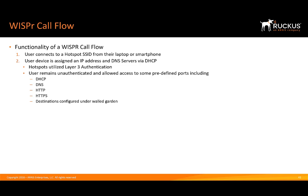The ports you're allowed access to include DHCP, DNS for resolution and lookups, HTTP, HTTPS, and then destinations configured under the walled garden. A great way to think about the walled garden is to think about CloudPath.